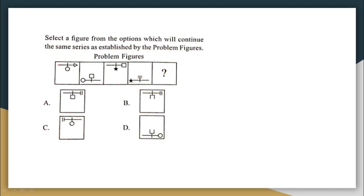In the first figure there is a horizontal line on the top part. In the second figure there is a horizontal line in the bottom part. In the third figure there is a horizontal line in the top part. In the fourth figure there is a horizontal line in the bottom part. So in the fifth figure, which is the missing figure, there has to be a horizontal line in the top part.